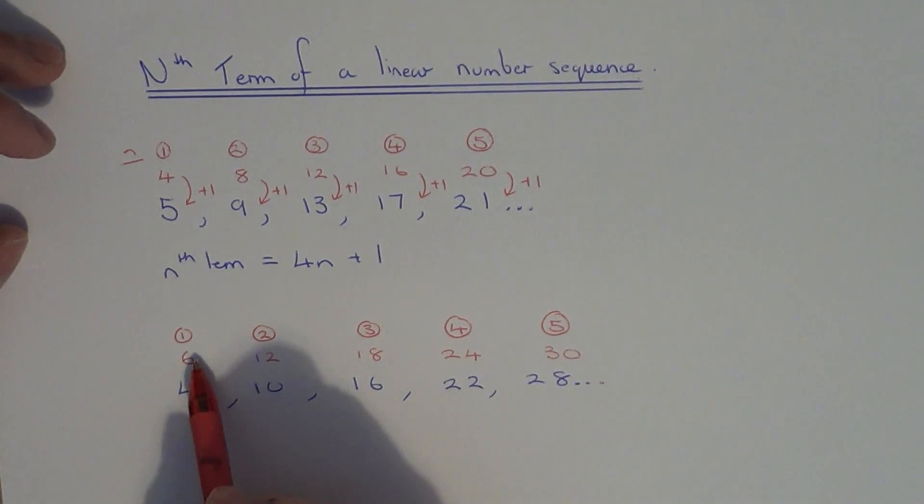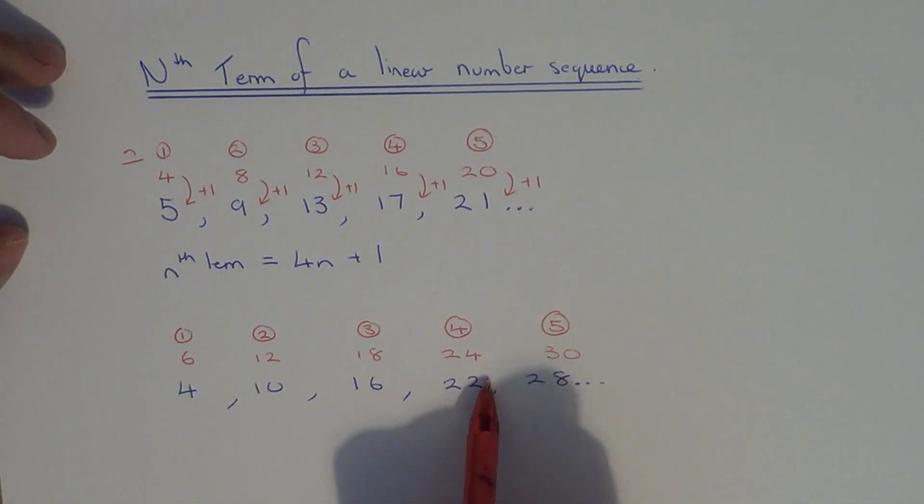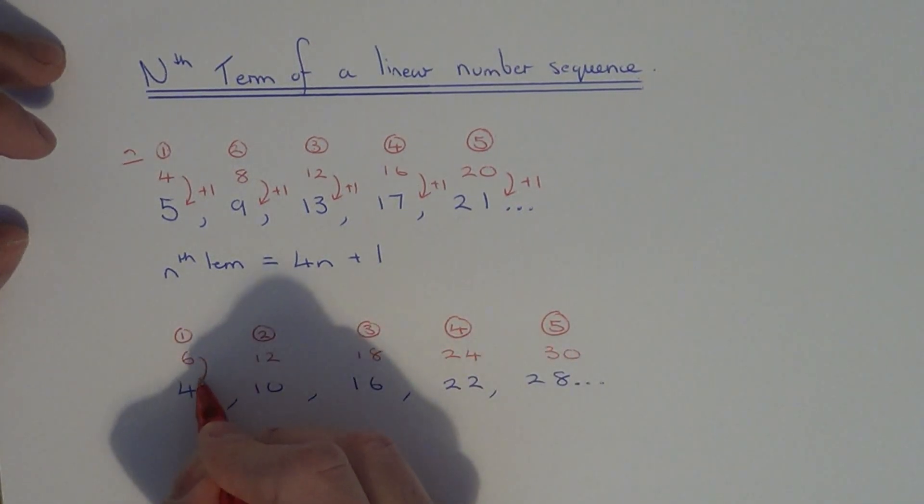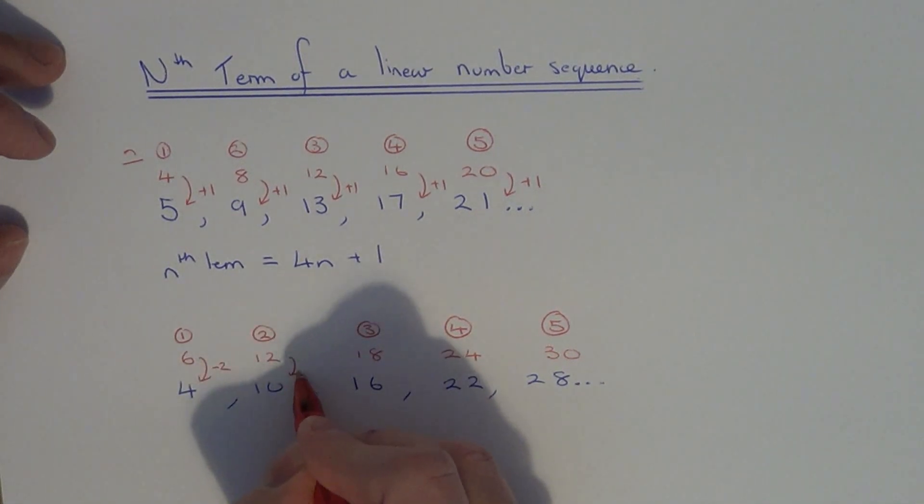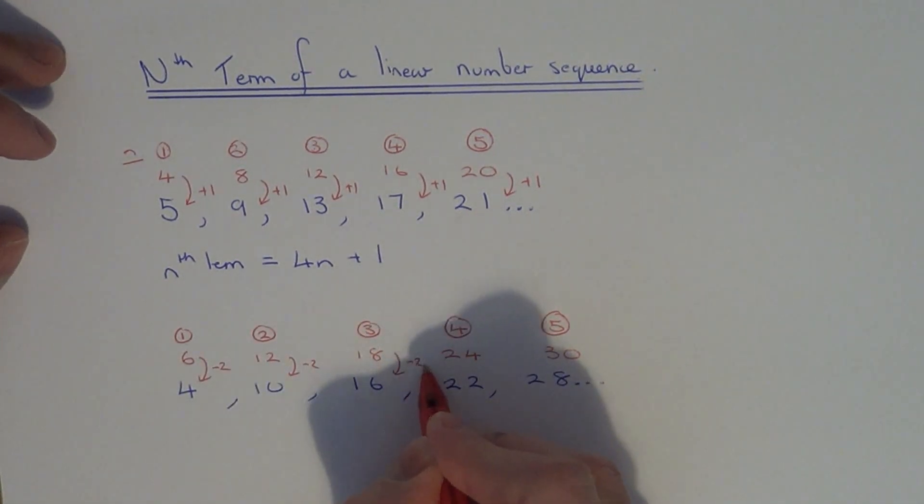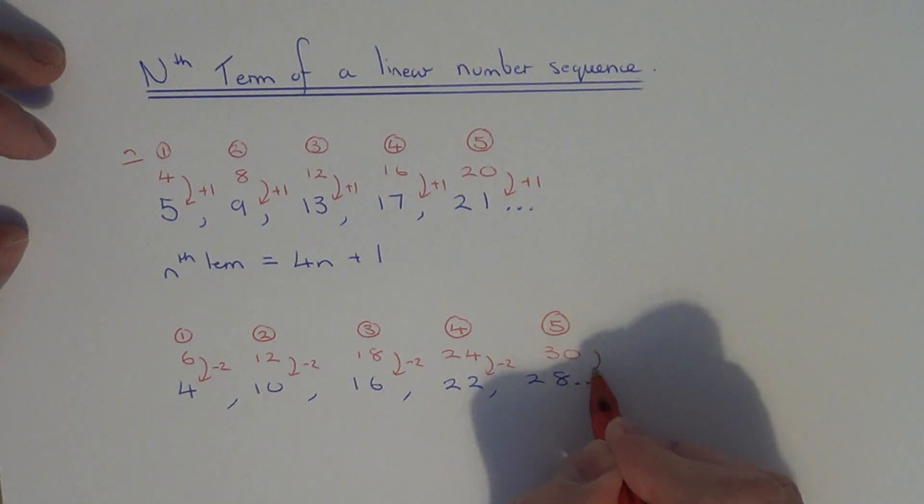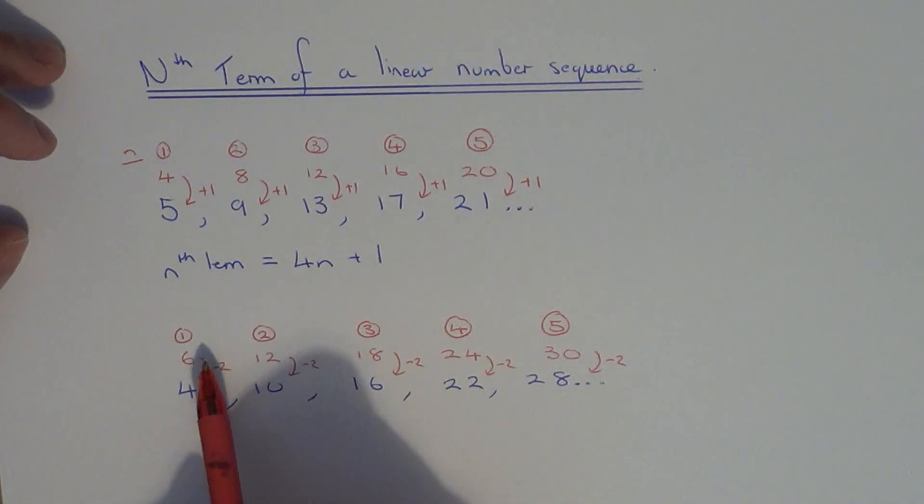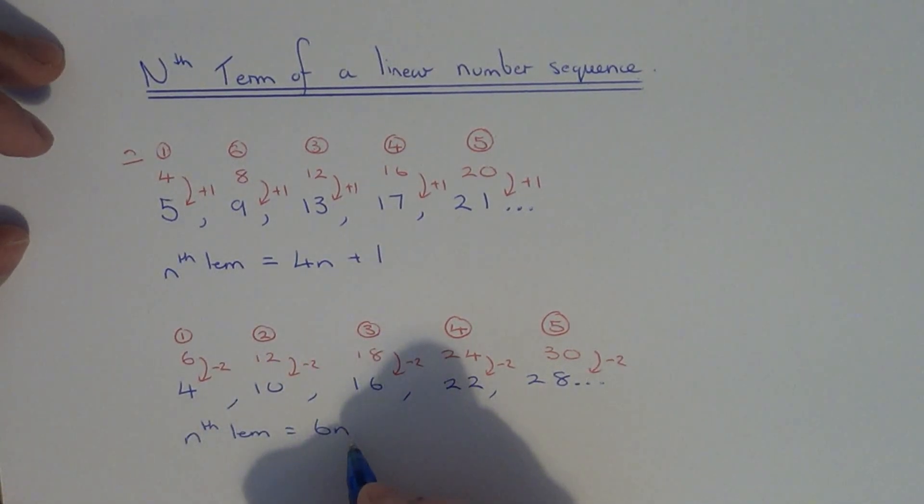Now what do we do to these multiples of 6 to give us the numbers underneath in our sequence? As you can see you have to take off 2. So to get from the position numbers to the numbers in the sequence you need to multiply the position number by 6 and then subtract 2. So in algebra this can be written down as 6n because we times the position numbers by 6 and then take away 2.